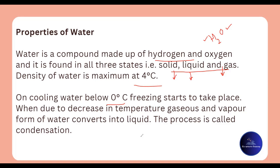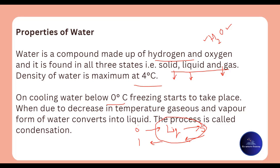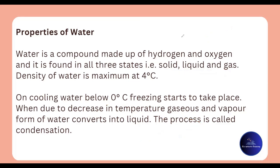When we warm ice up from zero degrees Celsius, it becomes liquid. When we add more heat, it becomes steam. If we cool the steam, it becomes liquid again, and then the liquid becomes ice. When steam or vapour converts to liquid, that process is called condensation. This process is used in rain.